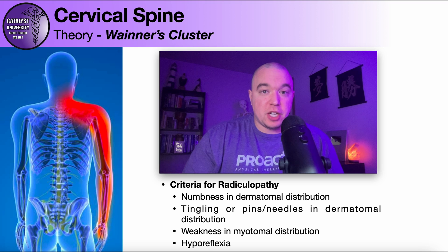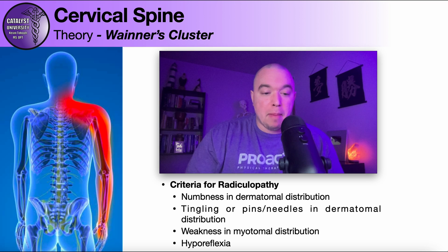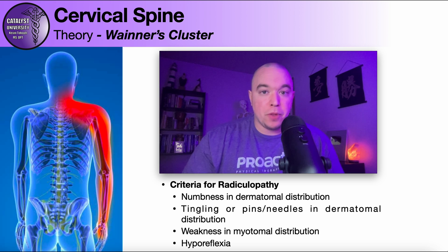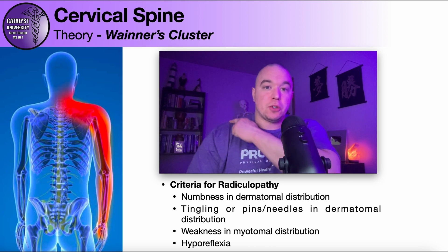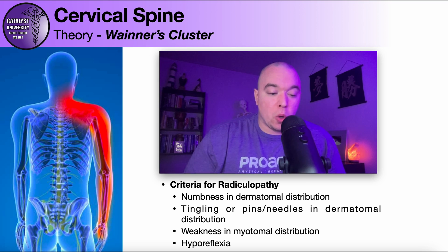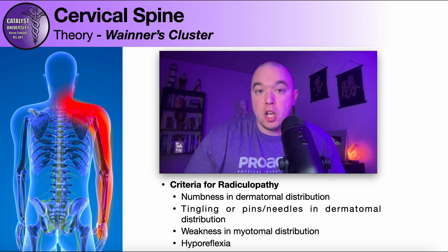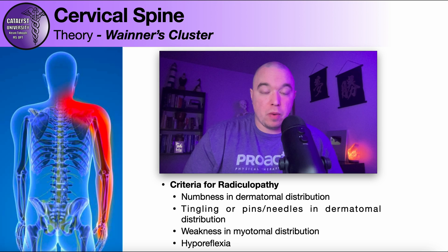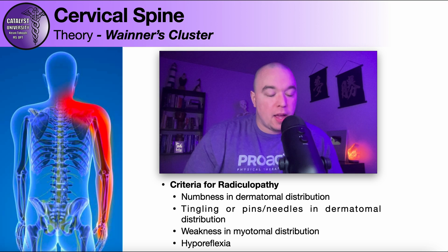Before we get into the cervical radiculopathy CPR more specifically, I think it's important to have a good understanding of what in the subjective and objective exam might prompt you to think there's a possibility that the person sitting in front of you has a cervical radiculopathy. Some people would say anytime symptoms are distal to the acromion, you need to be doing a neurological exam — testing reflexes, looking at dermatomes, myotomes, etc. And definitely include a few of these cluster tests: Spurling's, distraction, nerve tension test. Anytime the patient reports numbness, tingling, or pain radiating down the arm, it's in your interest to perform the tests in this cluster.